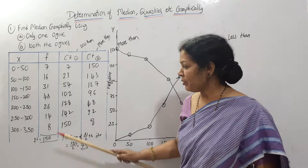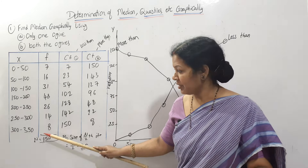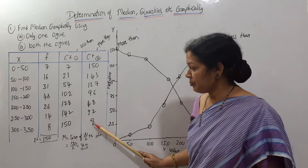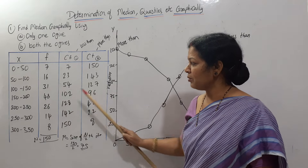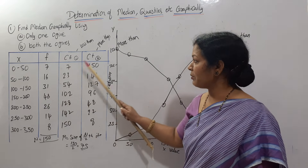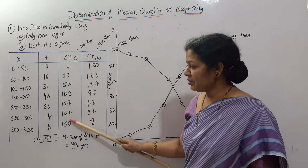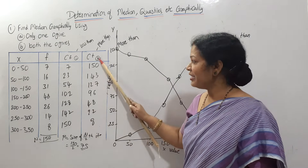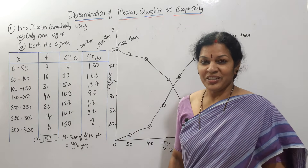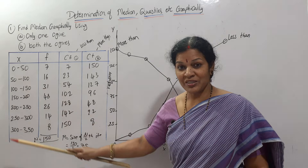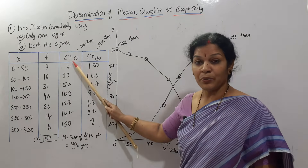For the more than cumulative frequency (CF2), we start from the bottom. Taking 8 as is, 8+14=22, 22+26=48, 48+48=96 — continuing until we get 150 total. In ascending order the last value is 150; in descending order the beginning value is 150. So CF1 is less than and CF2 is more than, with n = 150.